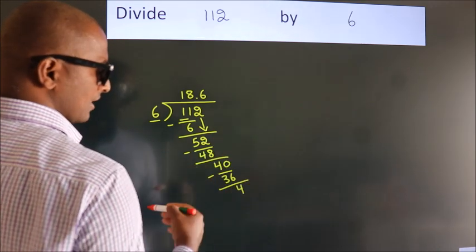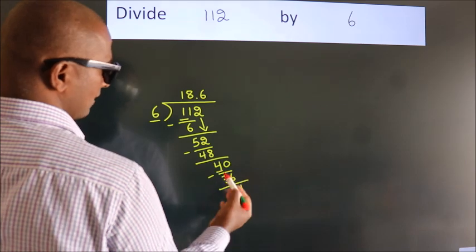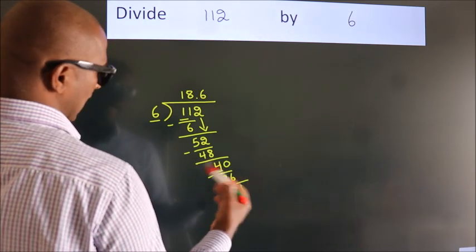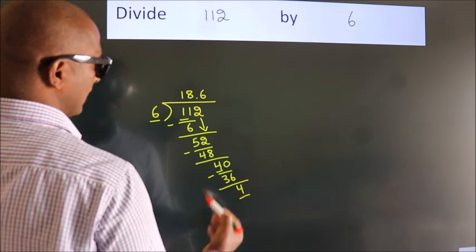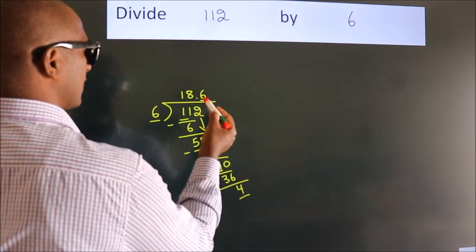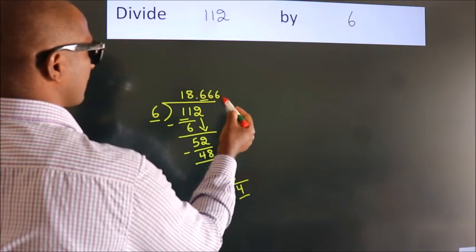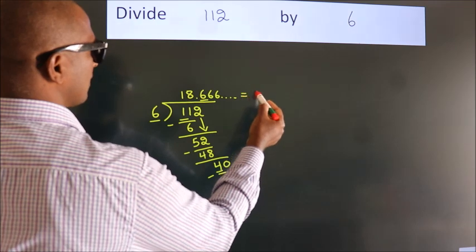Now you observe. We had 4 here and we got 4 again. That means this number keeps on repeating. So this is our quotient.